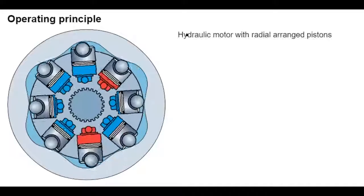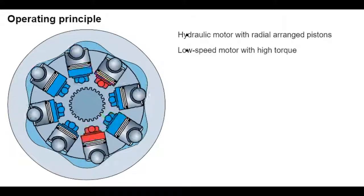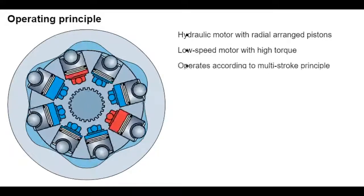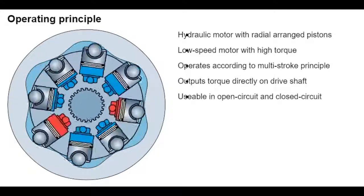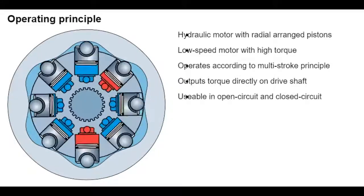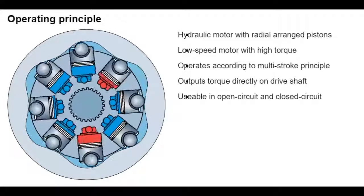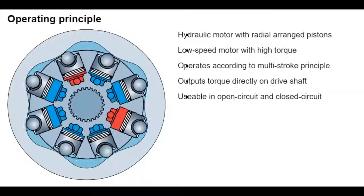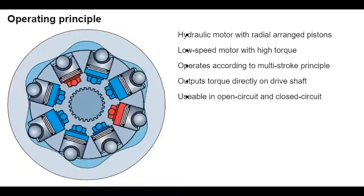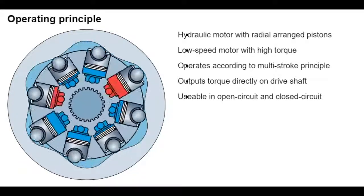The radially arranged pistons are pressurized in the cylinder bores and use the rollers to press against the cam ring. The counterforce on the cam ring generates torque that is transmitted to the driveshaft in the cylinder block through the splines. Once the torque exceeds the shaft load, the cylinder block rotates and causes the piston to move in its working stroke.